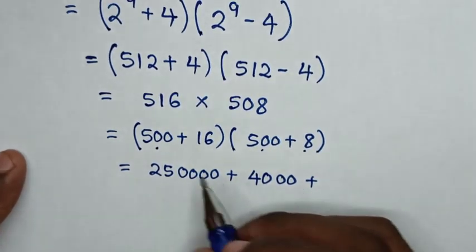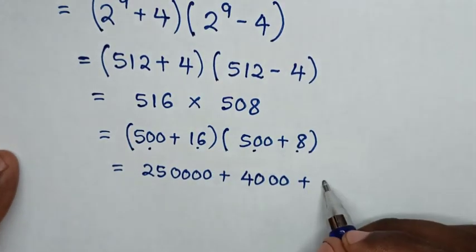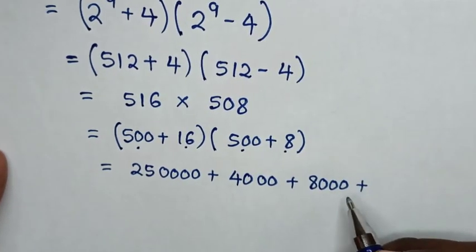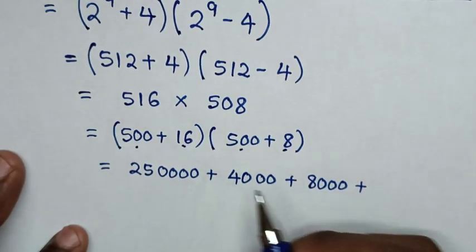Then 16 times 500, which is 8 with two zeros, or 8,000.